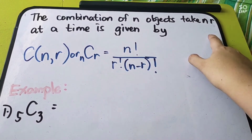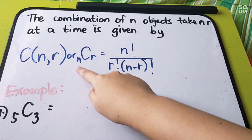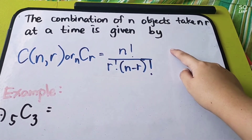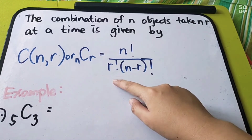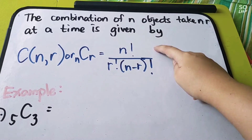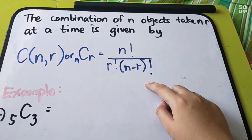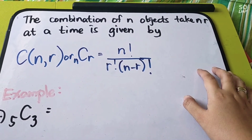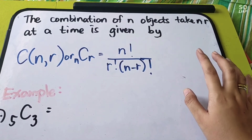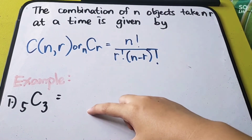Now let's move to the formula of combination. The combination of n objects taken r at a time is written as C(n, r) or nCr. It is equal to n factorial divided by r factorial times (n minus r) factorial, where n is the total number of given objects and r is the number of elements you are going to choose. This is the formula for finding the combination of objects.